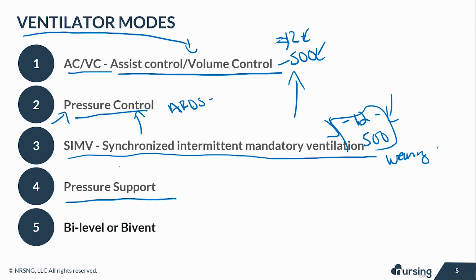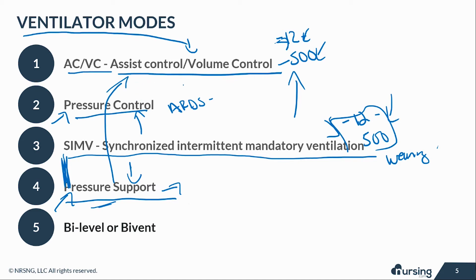Pressure support mode is usually seen together with SIMV because both are used for weaning. You can also have pressure support on its own — in that case, the ventilator is not set to deliver a certain number of respirations or tidal volume; it simply assists the patient to overcome the work of breathing. It's important to understand that if a patient is not ready to be weaned or cannot spontaneously breathe on their own, they should not be in pressure support mode — they need to be in assist control mode.